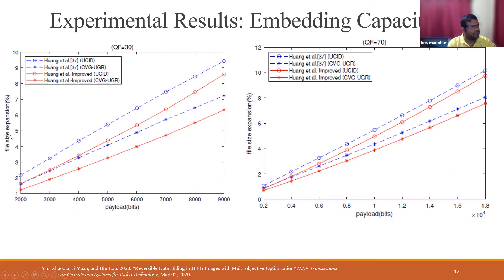In terms of file size expansion, using the UCI and CVG datasets, the improved method achieved lower file sizes across different payloads. As payload increased, the percentage file size increase was decent. This was a really significant contribution to the field because most reversible data hiding techniques had never considered this approach.